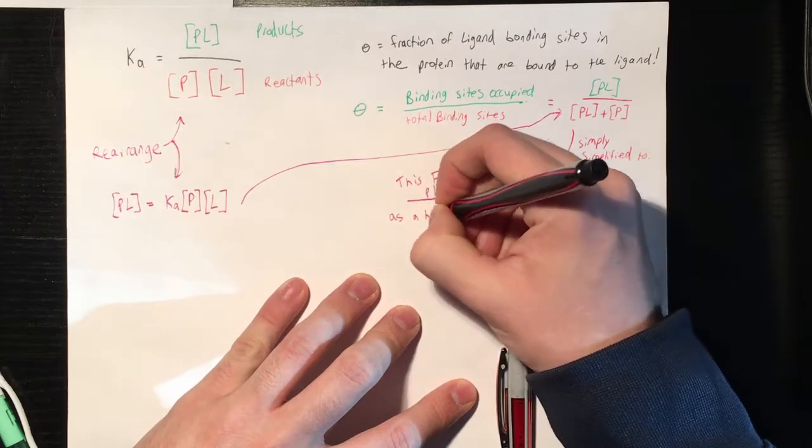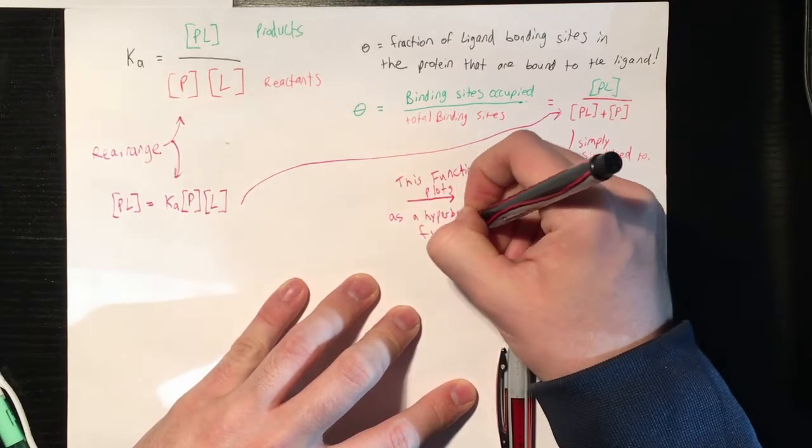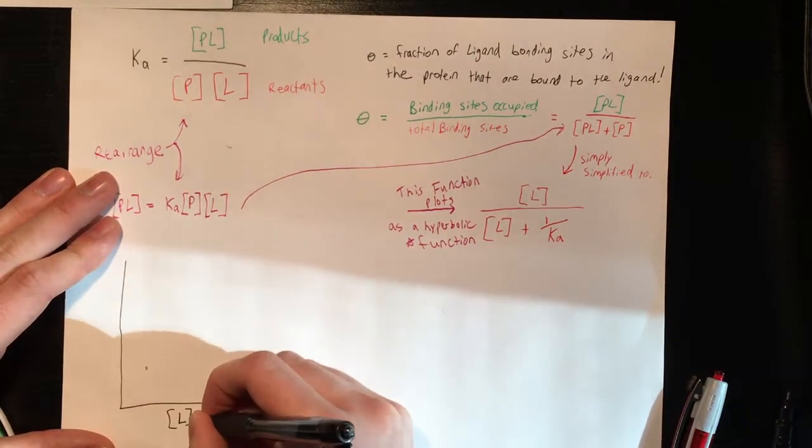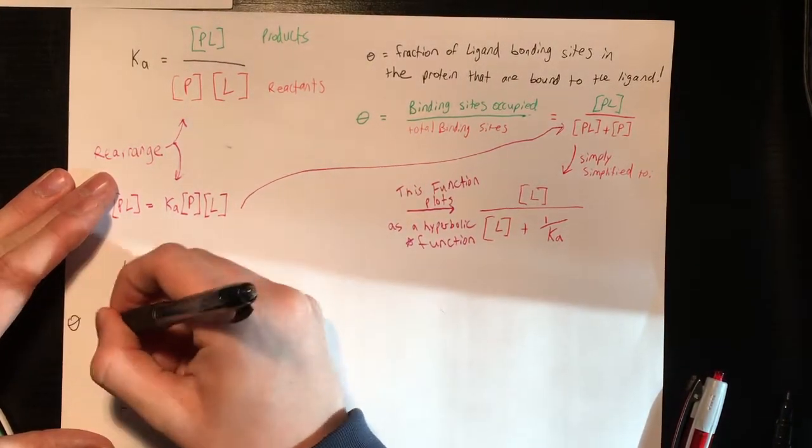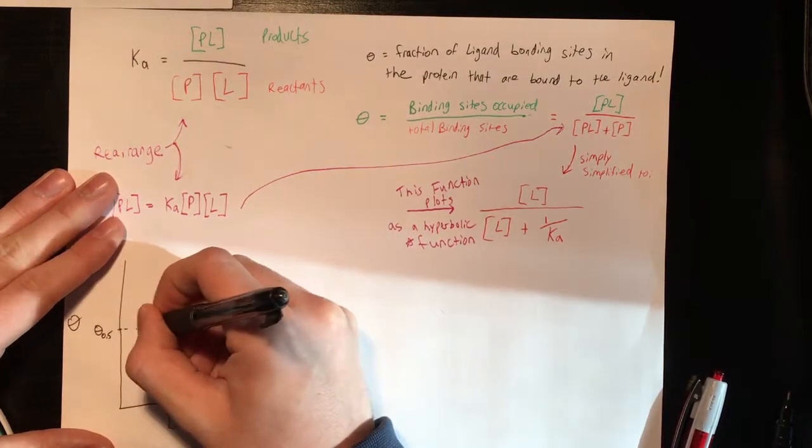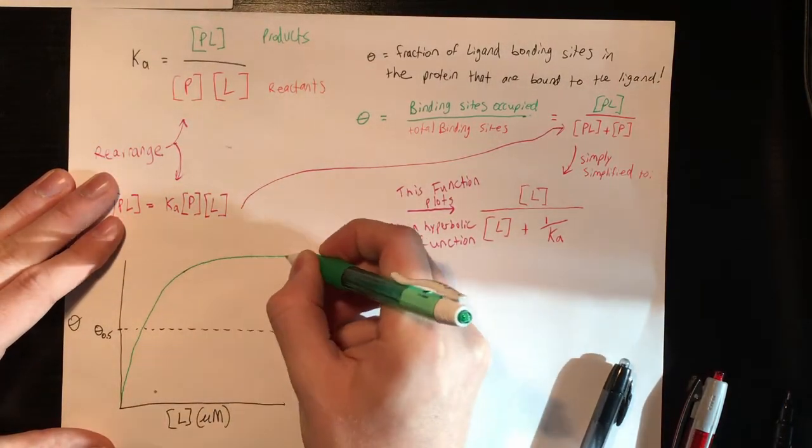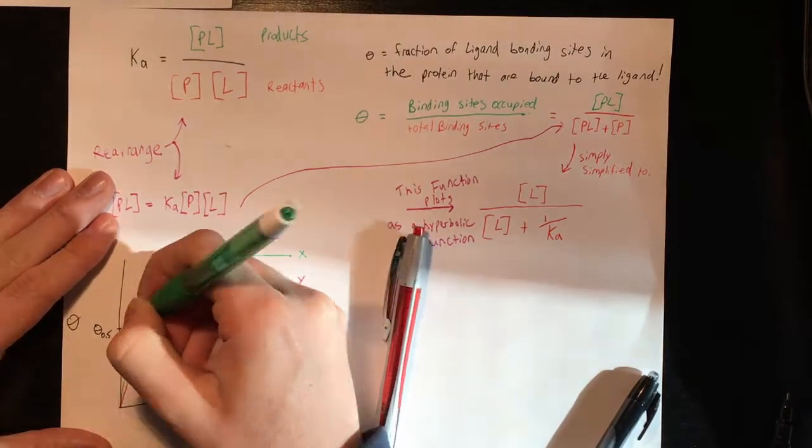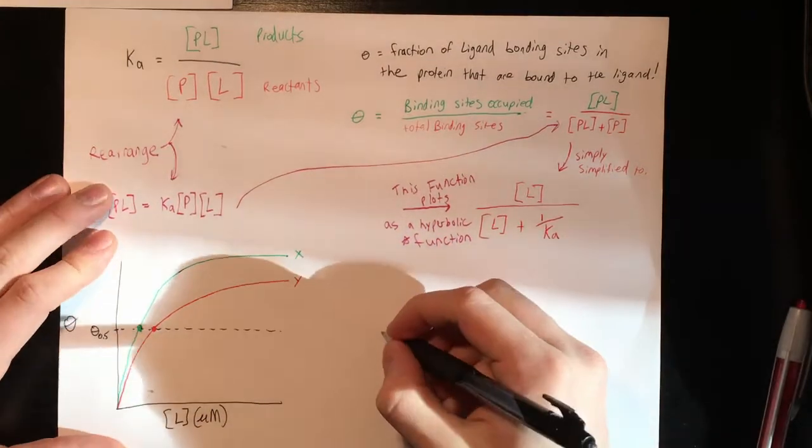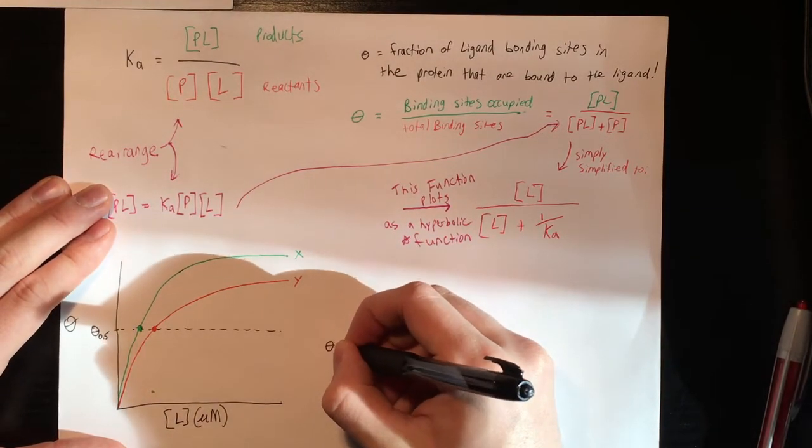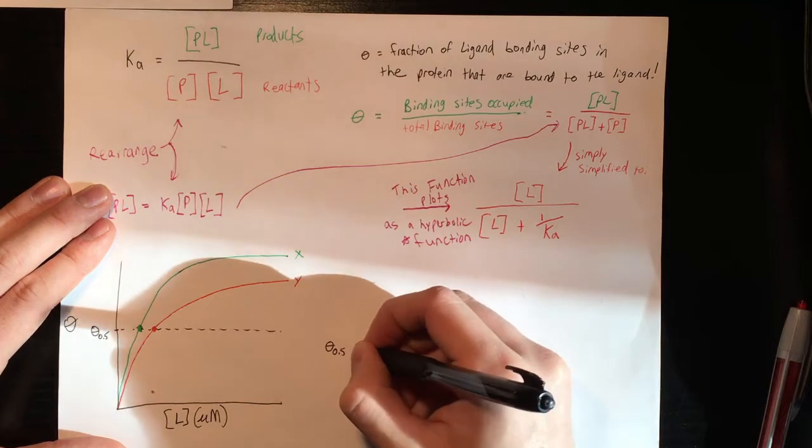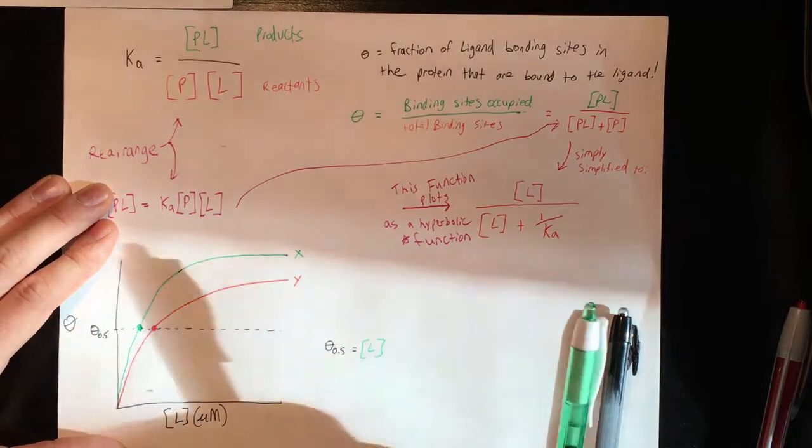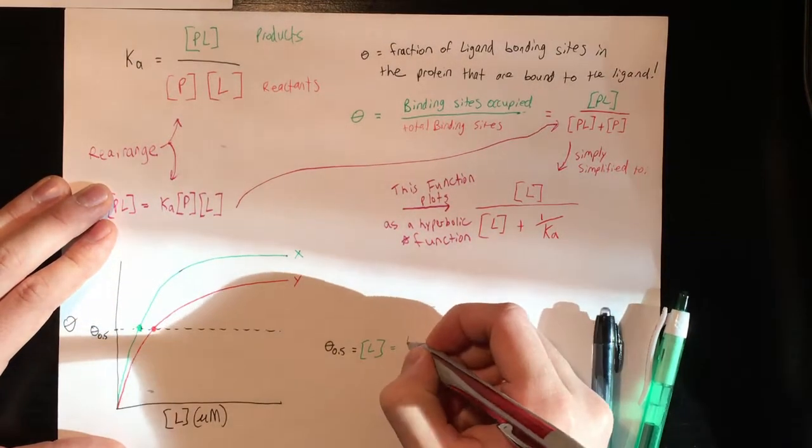And so if you plot this, it forms a hyperbolic function, which determines your affinity of the ligand for the binding site. And so you plot this with the concentration of your ligand versus the theta. And as you can see here, complex Y has a higher binding affinity than complex X. So as you can see, when you add more ligand, product Y will bind more quickly to the site and thus have more of its binding sites filled more quickly than X.